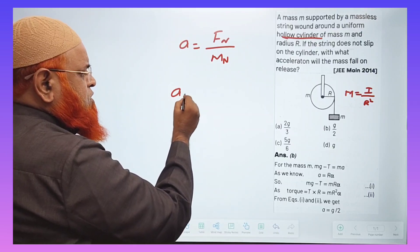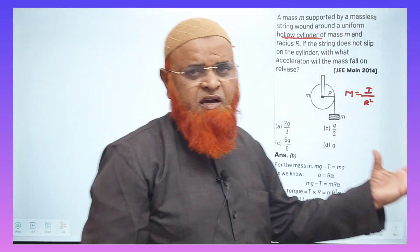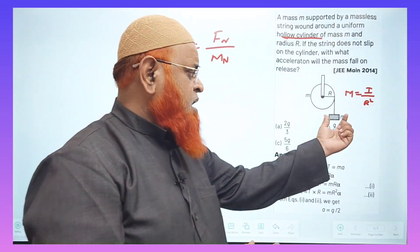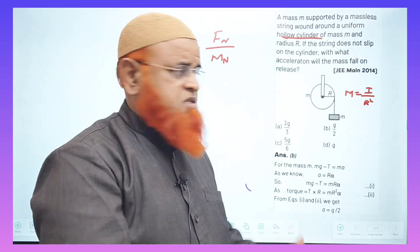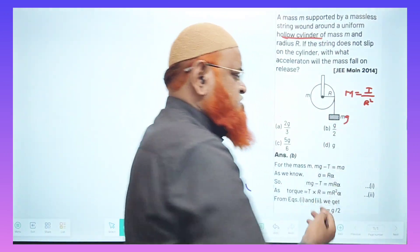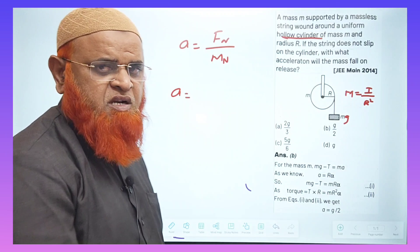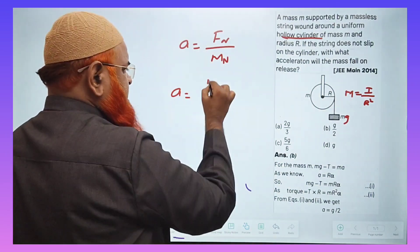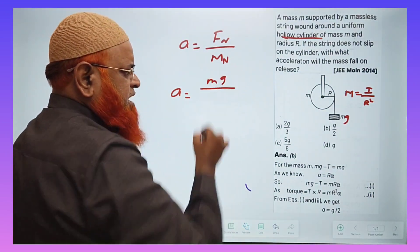So here, you know, force, what is the force acting here? If you see this pulley, only one mass is coming downwards and that is taken as M into G. Force is acting downwards, that is taken as M into G. So you can write here M into G by net mass.